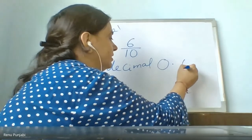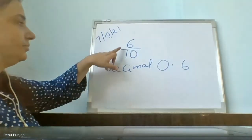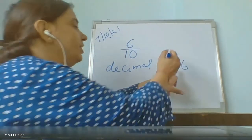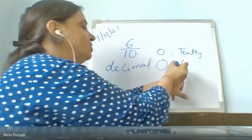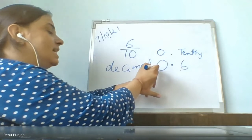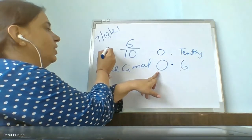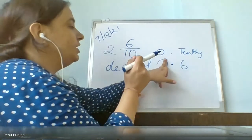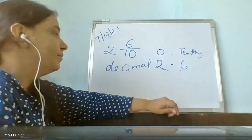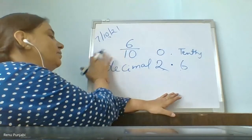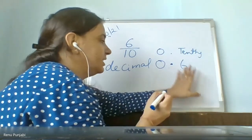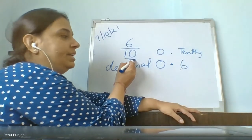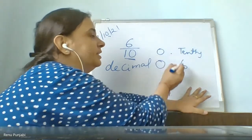Zero point six. Because when you write the place values — ones and tens — in the tens place value, six will come. The decimal point will come at its own place. Nothing is here in the whole numbers, so we write zero. If nothing is in the whole numbers, we write zero, then point six. It is having tens at the denominator, so six will come under the tens place.